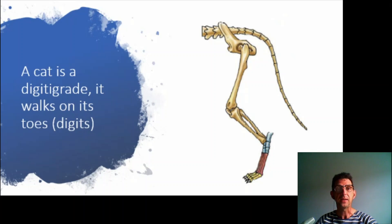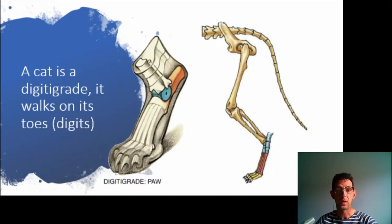A cat is a digitigrade. It walks on its toes or its digits, just like a dog. So it has a digitigrade paw.